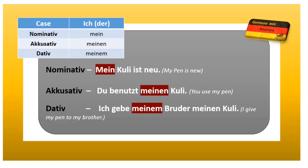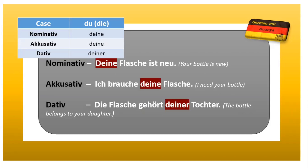Next is 'du'. With 'du', in nominative it becomes 'dein', accusative 'deinen', and dative 'deiner'. So my sentences will be: 'Deine Flasche ist neu' — your bottle is new. Accusative: 'Ich brauche deine Flasche' — I need your bottle. And dative: 'Die Flasche gehört deiner Tochter' — the bottle belongs to your daughter. You can check the highlighted words: dein, deine, deiner.